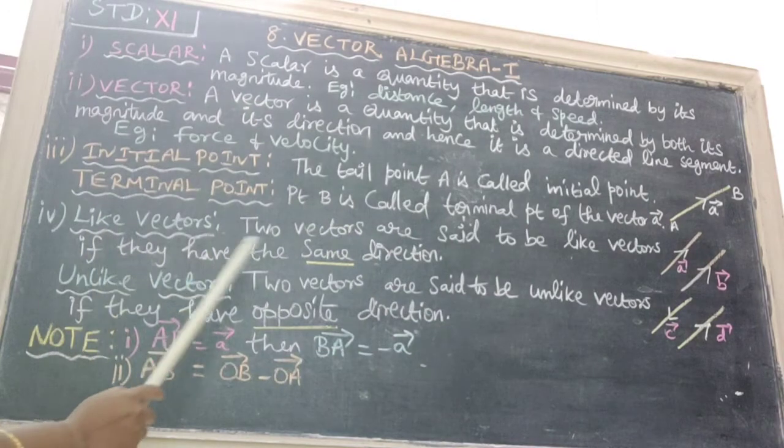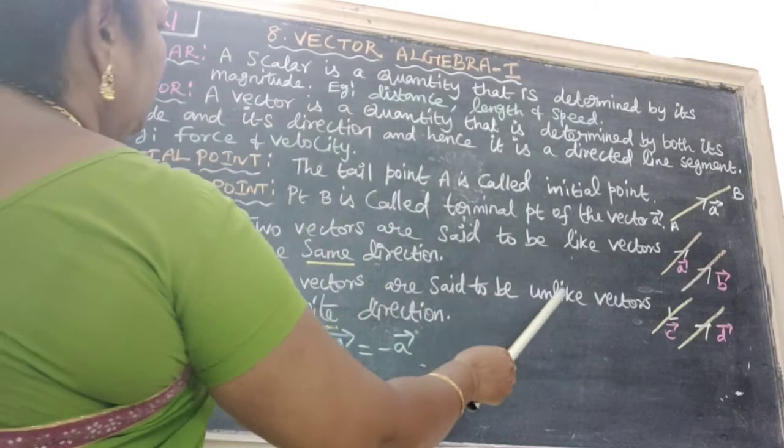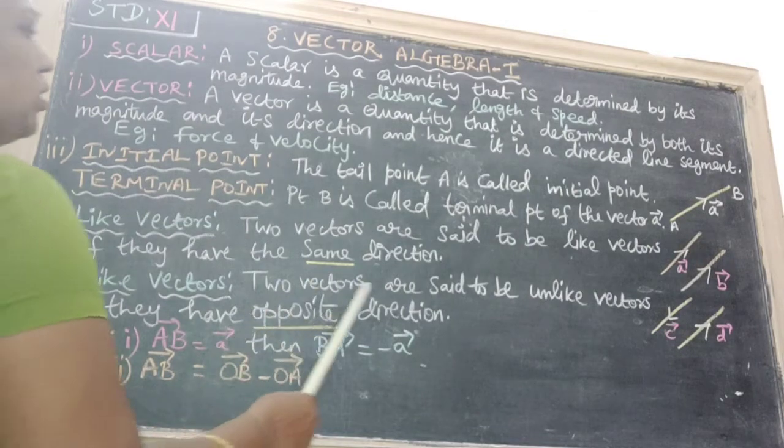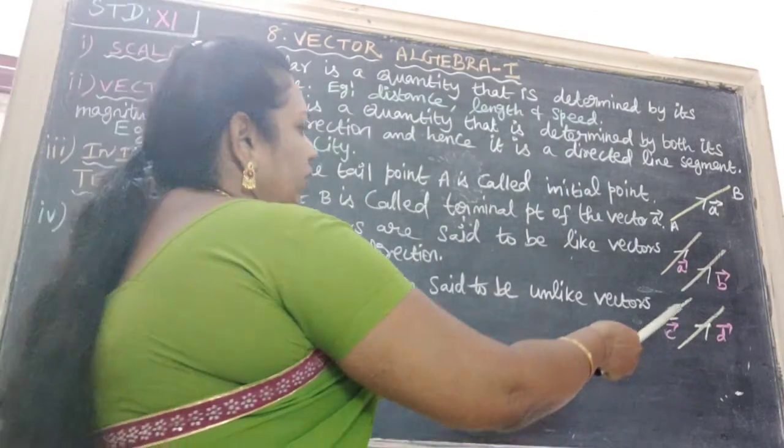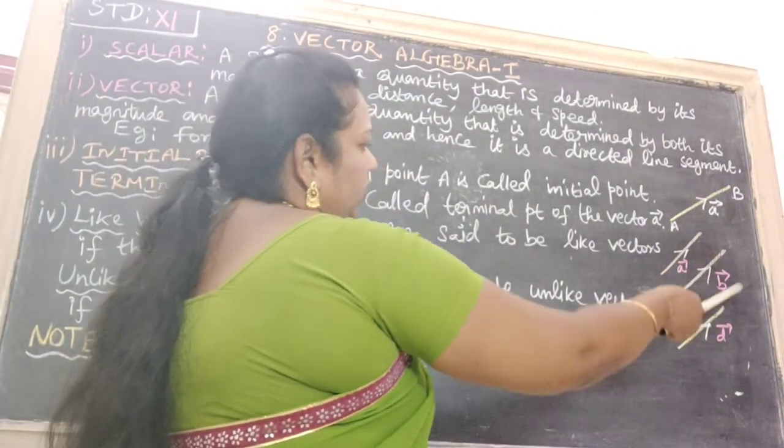Next one is unlike vectors. Two vectors are said to be unlike vectors if they have opposite direction. The C vector direction is on this side, D is on the opposite side.